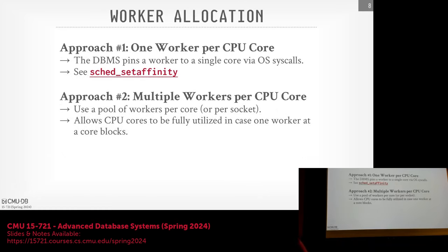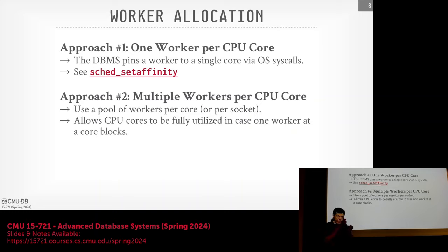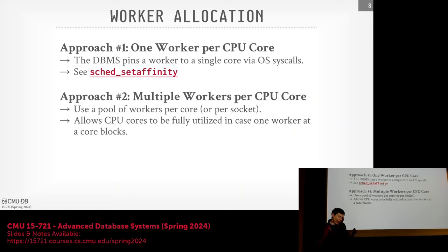How do we want to assign workers to CPU cores? The basic approach is to have a single dedicated worker be the only thing running on a single CPU core. This prevents contention where two worker threads try to run at the same time on the same core and trash each other's L3 caches.